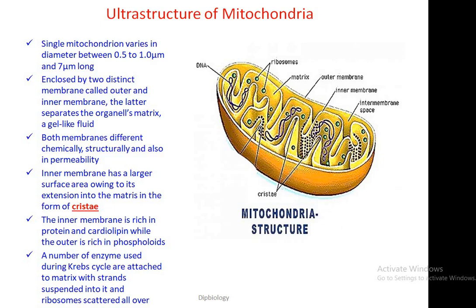The inner membrane has a larger surface area due to its extensions into the matrix in the form of cristae. The inner membrane is rich in protein and cardiolipin, while the outer membrane is rich in phospholipids. A number of enzymes used during the Krebs cycle or TCA cycle are attached to the matrix, and some mitochondrial DNA and triglycerides are also scattered throughout the matrix.